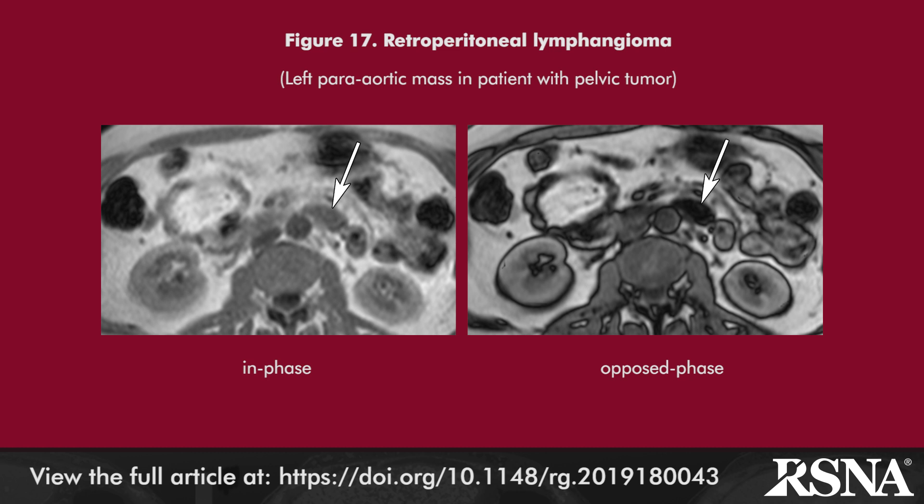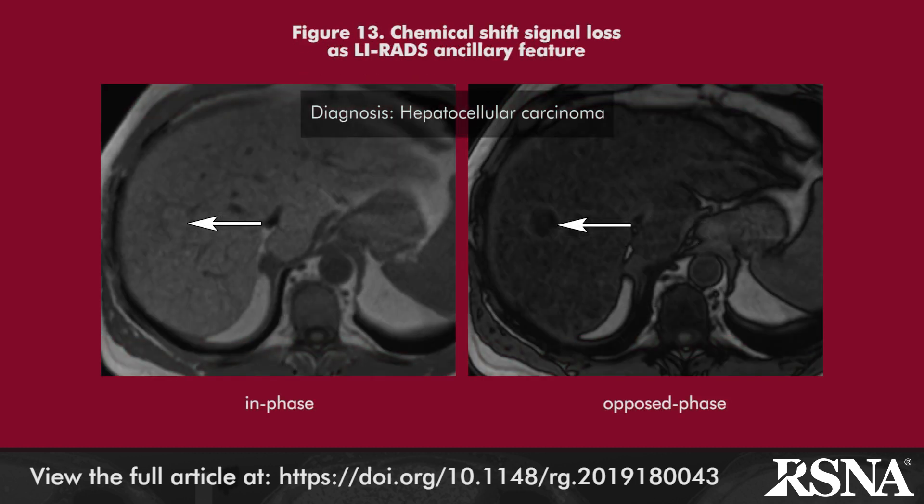For hepatic lesions, intralesional fat as depicted on chemical shift MR is a LIRADS ancillary feature favoring the diagnosis of hepatocellular carcinoma.